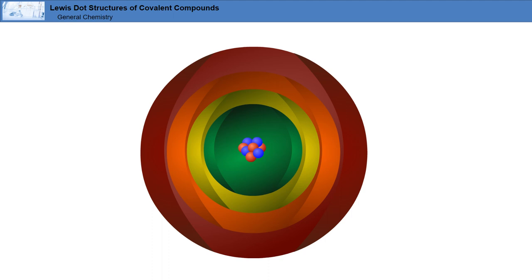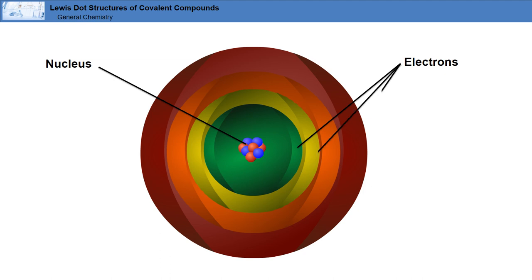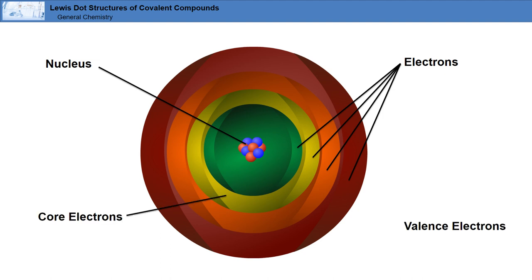Atoms are made up of protons, neutrons, and electrons. Protons and neutrons are located at the center of the atom, in the nucleus. Electrons surround the nucleus at varying distances and they can be divided into core electrons and valence electrons. Core electrons are tightly bound to the nucleus and valence electrons are the outermost electrons. They're also involved in all chemical reactions.